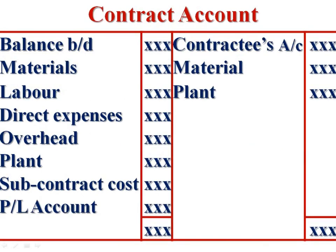This is the contract account. On the debit side: opening balance, material, labour, direct expenses, overhead, plant, and subcontract cost. On the credit side: contract price, closing material, plant at the site. The closing balance is the net profit transferred to the profit and loss account.